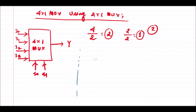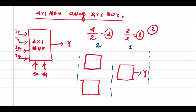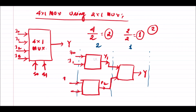In the first stage we have two 2x1 multiplexers, and in the second stage we have one 2x1 multiplexer. Let the first multiplexer output be Y1, the second Y2, and the final output be Y. Y1 and Y2 are connected to the inputs of the second-stage multiplexer. The inputs of the first multiplexer are I0 and I1, and the inputs of the second multiplexer are I2 and I3.